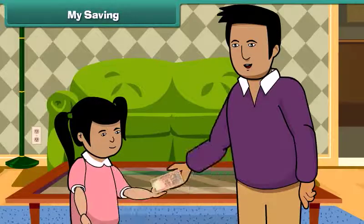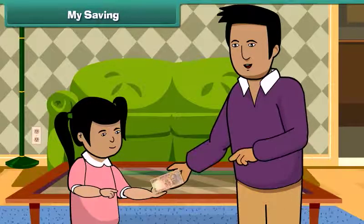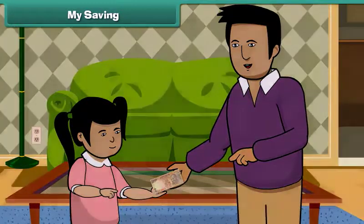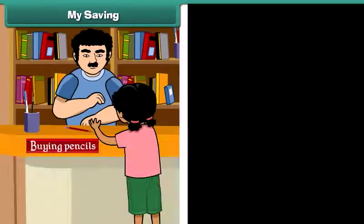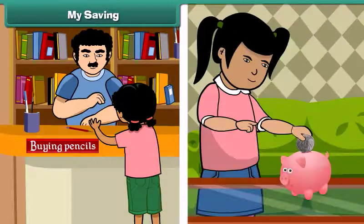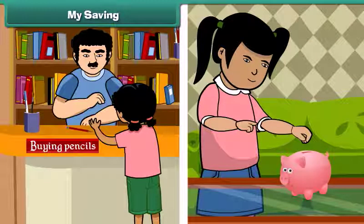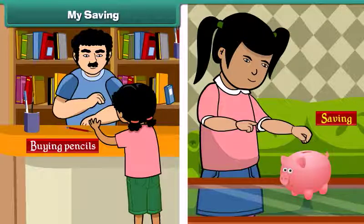Remy's father gave her 10 rupees. She spent 2 rupees for buying pencils, and the rest she dropped in her piggy bank. The money kept in her piggy bank is called saving.